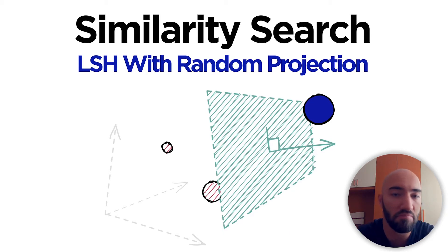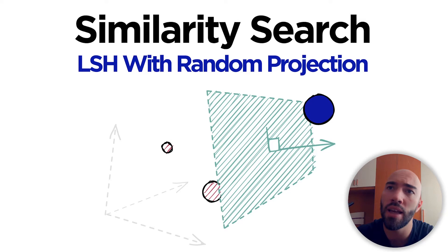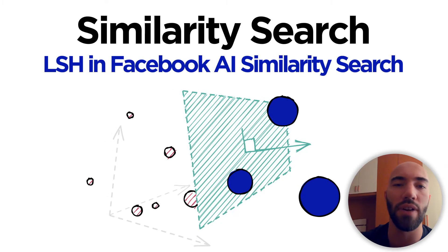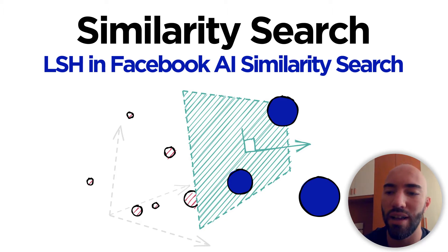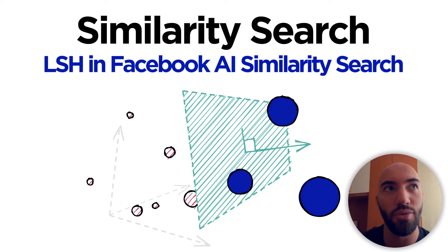In this video we're specifically covering LSH random projection. We'll work through a few visualizations to understand what it's actually doing, and whilst we're doing that we'll also work through how to implement it in simple Python code. The FAISS implementation, which is much more efficient, will be covered in a separate video — I'll include a link to that in the description.